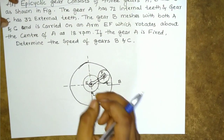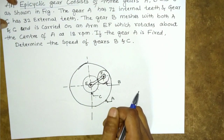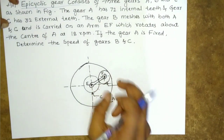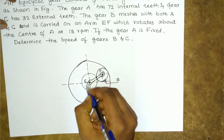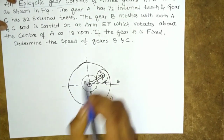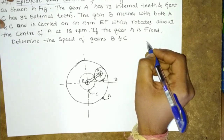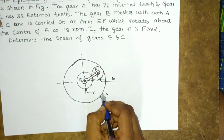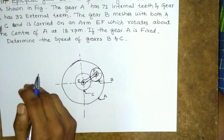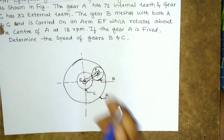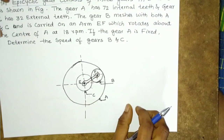In an epicyclic gear train, one shaft will have relative motion with respect to the other. In this problem, the arm is rotating at 18 RPM and gear A is fixed. We need to determine the speeds of gears B and C.